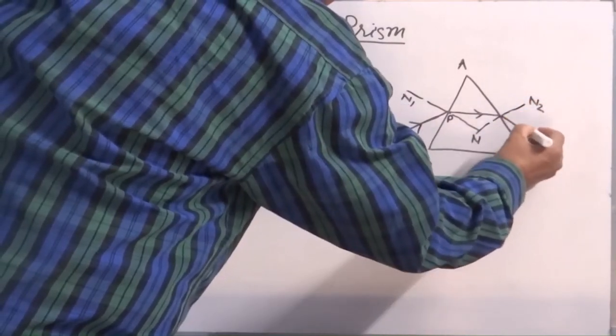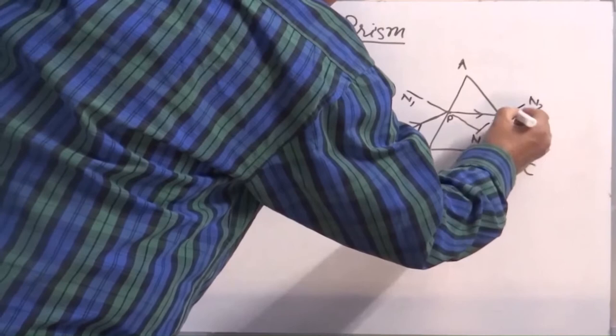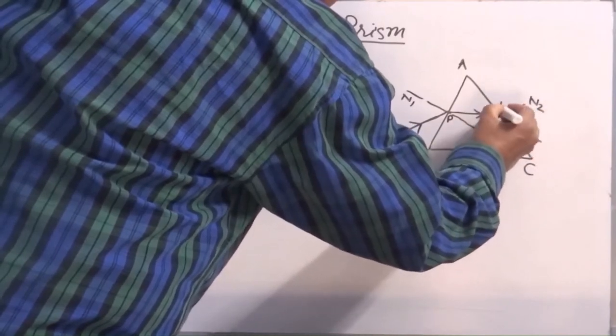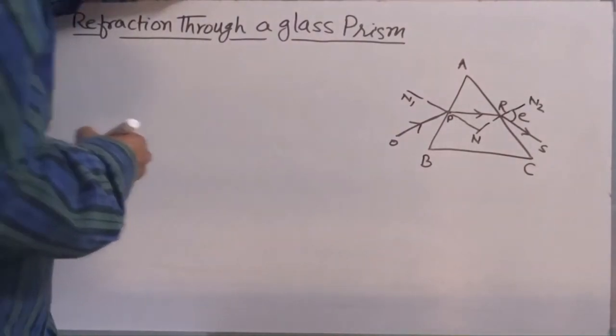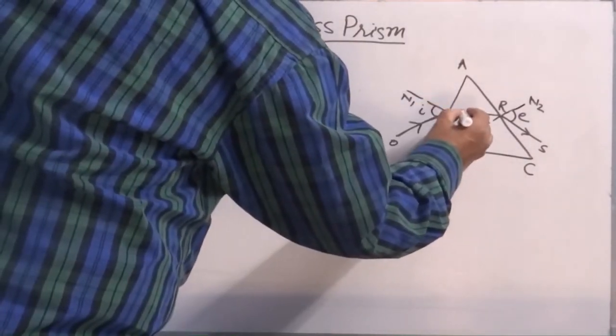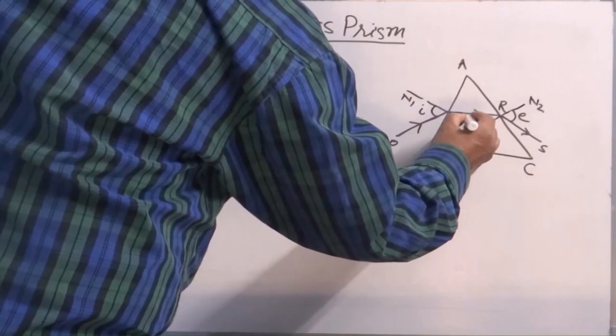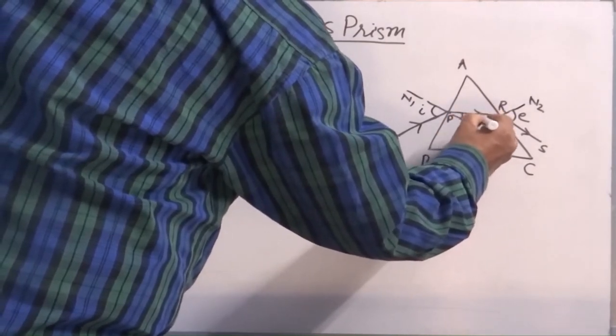And finally the ray comes out in air. This is called emergent angle. This is R and S. I can define this angle as I. This is R1. This is R2.